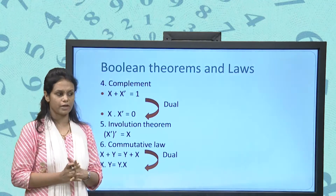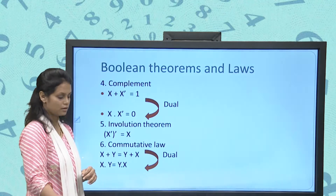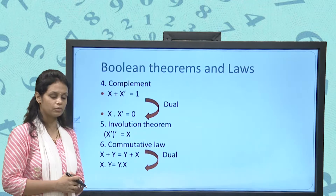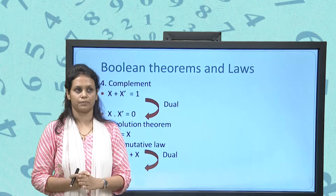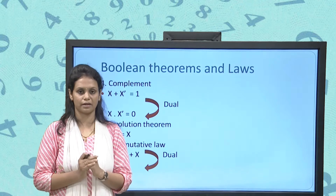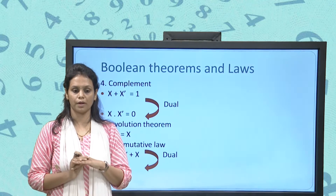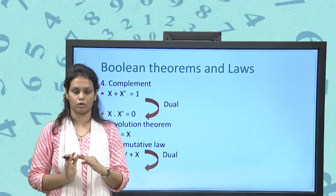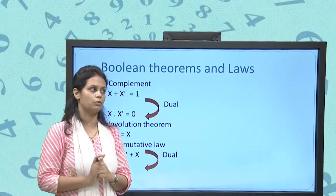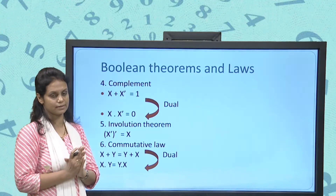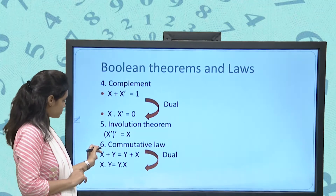The involution theorem states x'' = x, just as A'' = A in set theory. The commutative law states that the order of elements does not matter: x + y = y + x, and x · y = y · x, just as 2 + 3 = 3 + 2 in normal arithmetic.